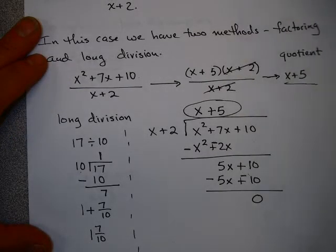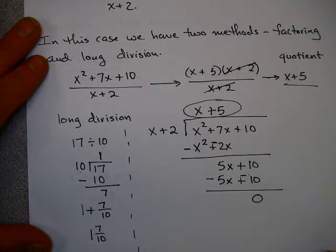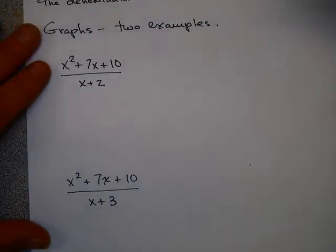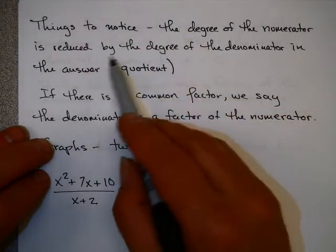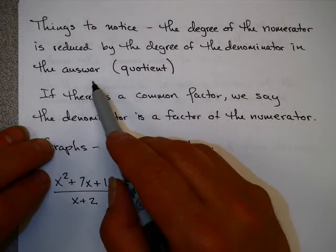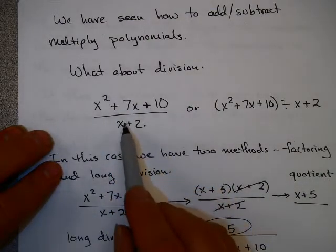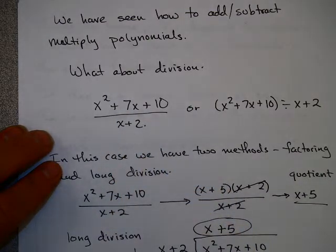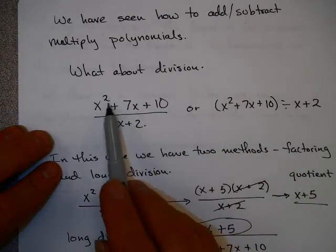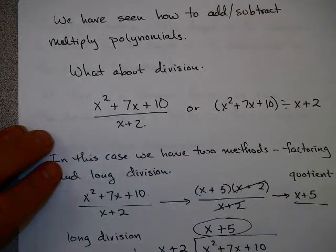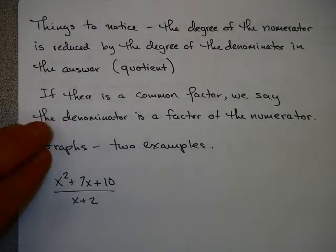Now this should show you that factoring can be your friend in these problems. If you can factor the problem, it certainly makes it a lot easier than doing it by long division. There's a couple of things to note. The degree of the numerator is reduced by the degree of the denominator in the answer. We started with a degree of 2, and the denominator has a degree of 1. And the answer, x plus 5, has a degree of 1. And 2 minus 1 is 1. So that's something to note happens here.